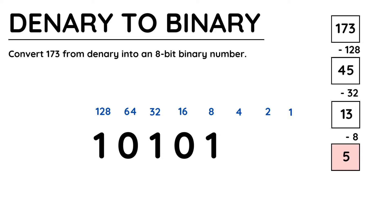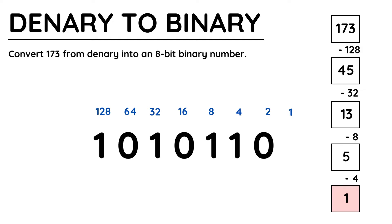When it gets to smaller numbers like this you might be able to spot that 5 is going to be 4 and 1, but I'm still going to continue step by step. 4 goes into 5 so I write 1 beneath 4. Taking 4 from 5 gives just 1 remaining and now I look at 2. 2 does not fit inside 1 so it's a 0 to place beneath the number 2. Next I compare 1 with 1, and 1 fits perfectly into 1 so I place a 1 beneath it.